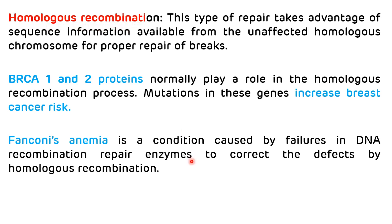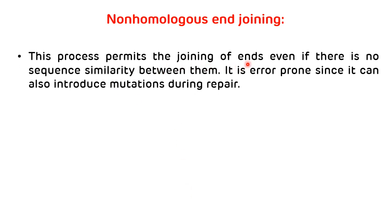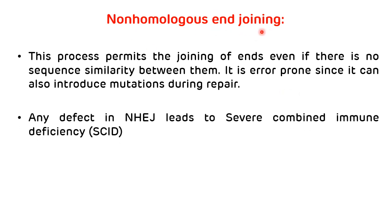For homologous recombination, information available in the unaffected homologous chromosome is required. Non-homologous end joining permits the joining of ends even if there is no sequence similarity between them, but it is error-prone and can introduce mutations during repair. Any defect in non-homologous end joining leads to severe combined immunodeficiency, also called SCID. For non-homologous end joining, a homologous chromosome is not required.